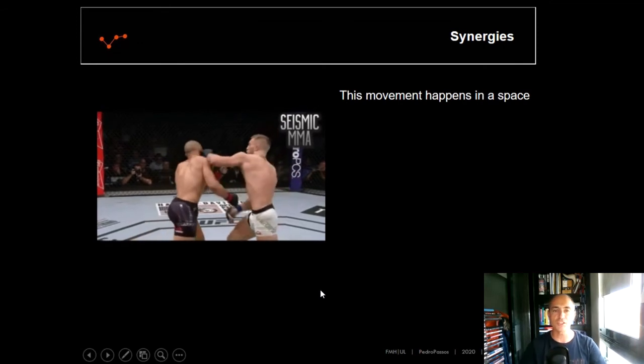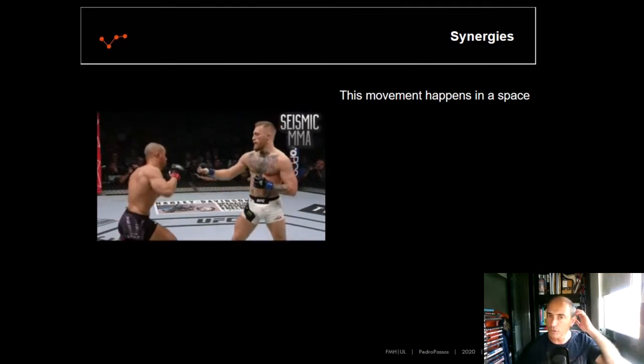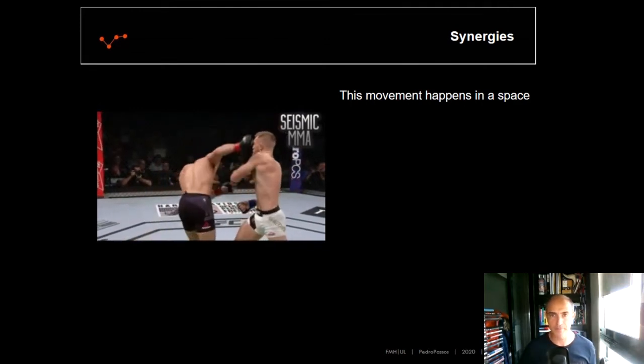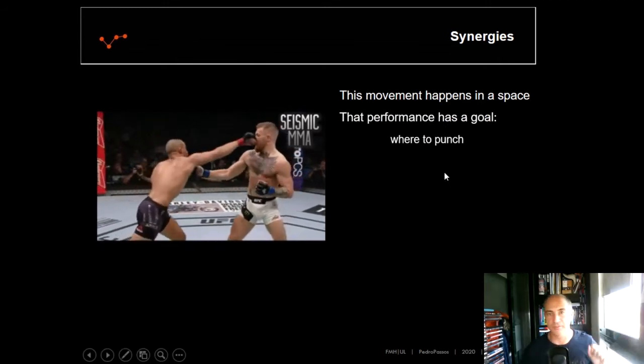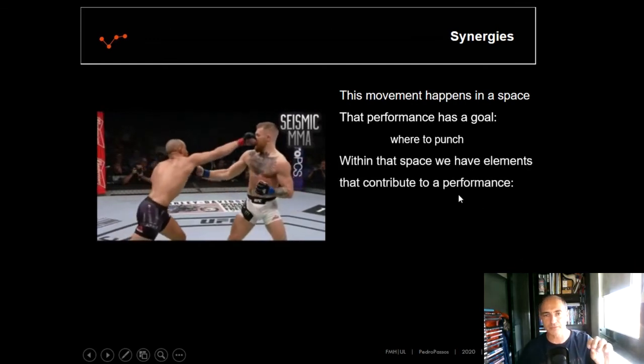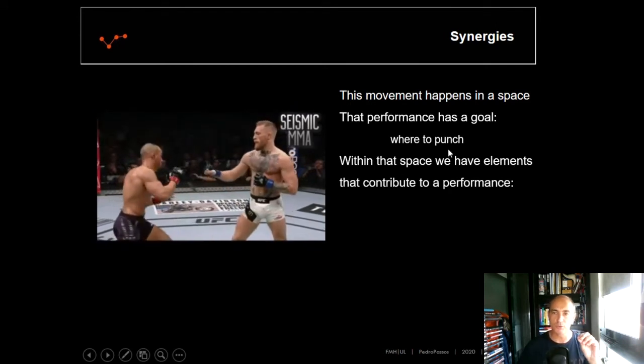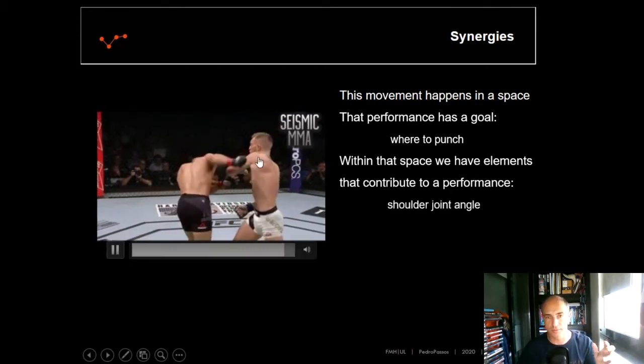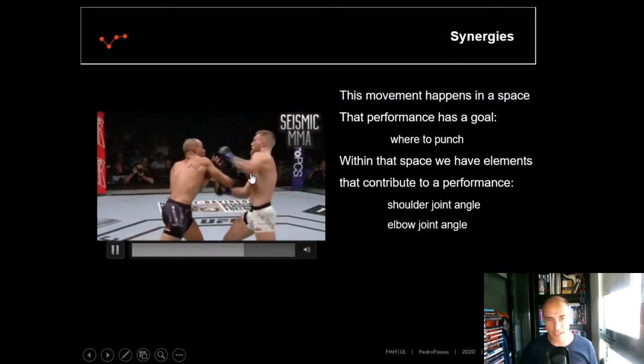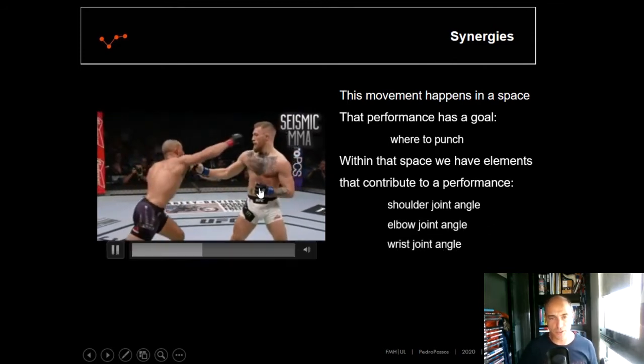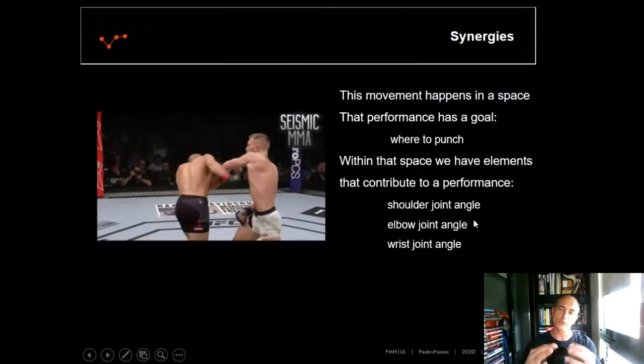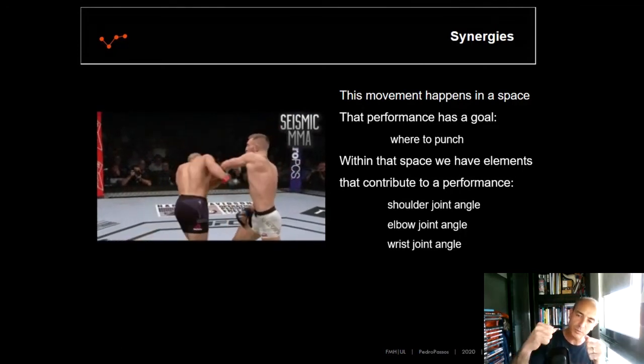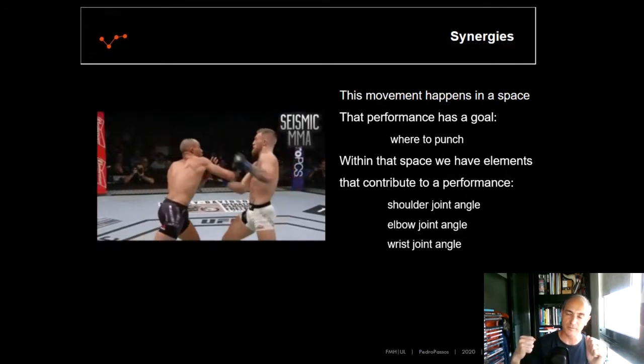Now let's go back to Type C synergies and analyze this beautiful movement, this punch from Conor McGregor. I think you will agree that this movement happens in a space. That performance has a goal, which is where to punch the face of the opponent. And within that space, Conor has some elements that contribute to the performance. For instance, the shoulder joint angle, the elbow joint angle, and the wrist joint angle. All these elements need to adjust to each other in order to stabilize the right point where to punch the opponent in the face.